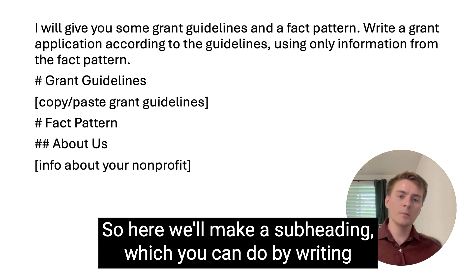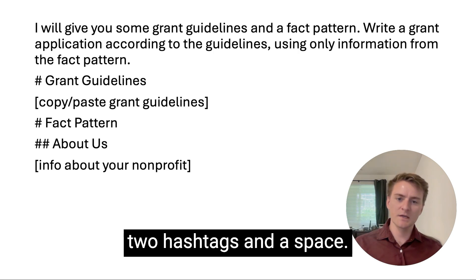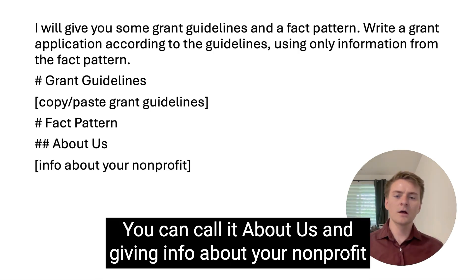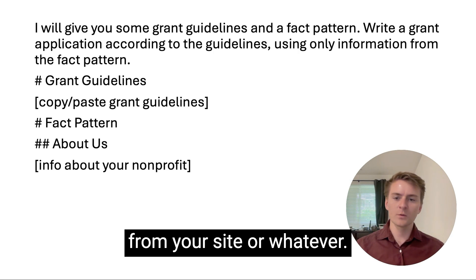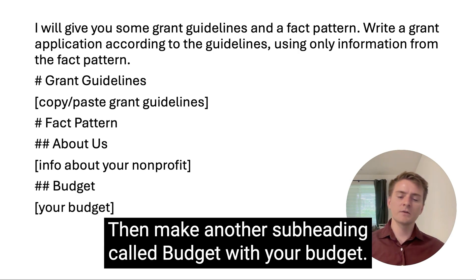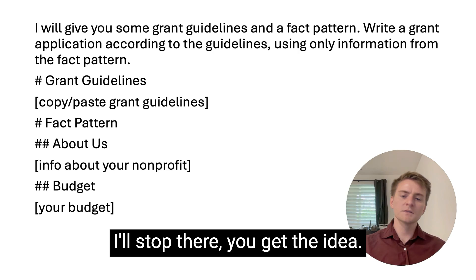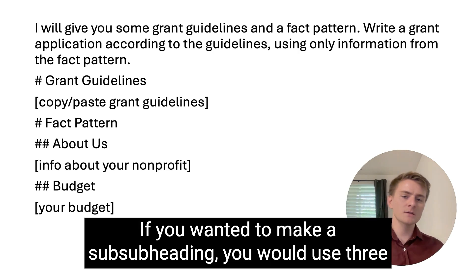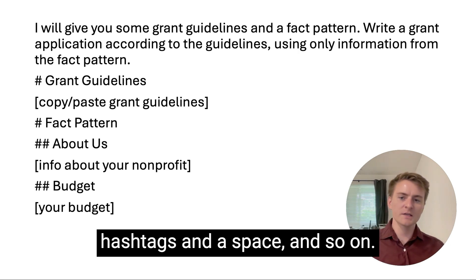So here we'll make a subheading, which you can do by writing two hashtags and a space. You can call it 'about us' and give it info about your non-profit from your site or whatever. Then make another subheading called 'budget' with your budget. If you wanted to make a sub-subheading, you would use three hashtags and a space, and so on.